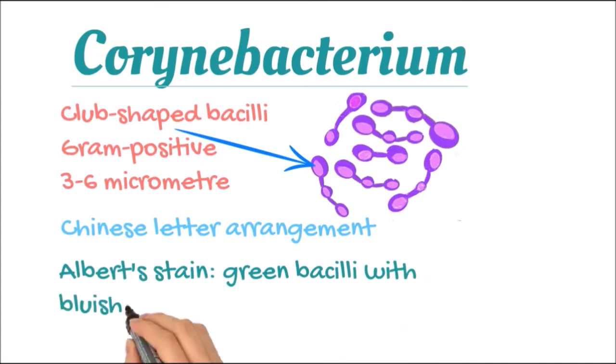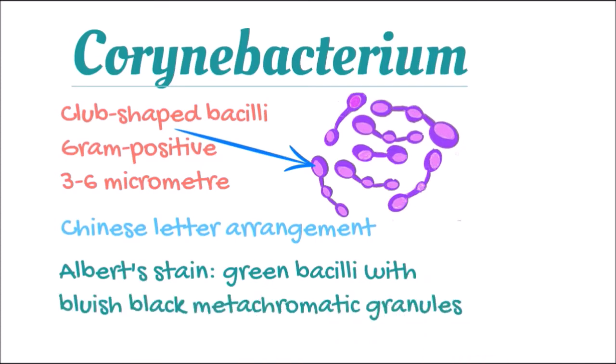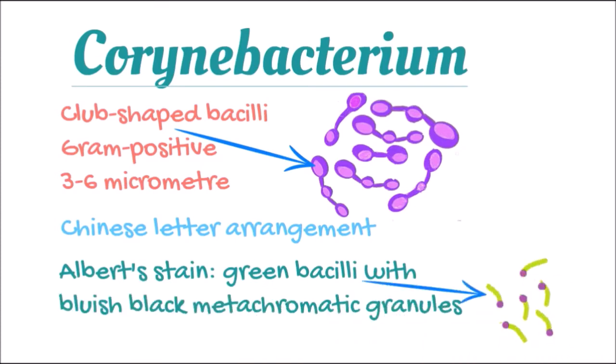It also takes up Albert stain, which is a special kind of stain, and it stains as a green bacilli with bluish-black granules.